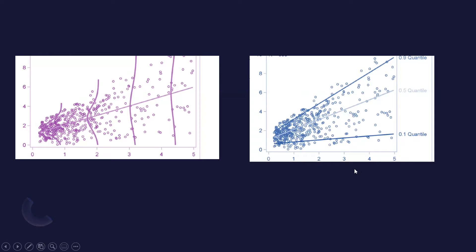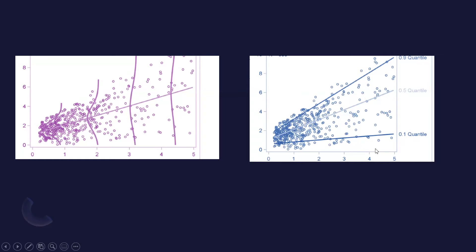On the right hand side, the second graph shows quantile regression lines. We have three different quantile regression lines — at the 10%, 50%, and 90% quantile level. This line therefore minimizes the sum of absolute residuals and thus minimizes error on both sides.